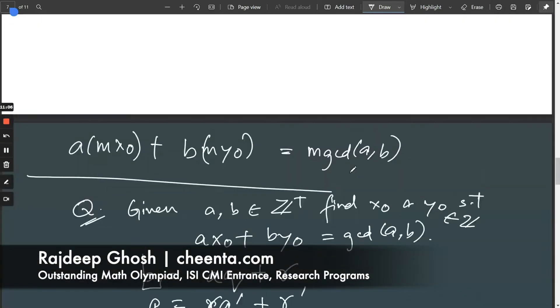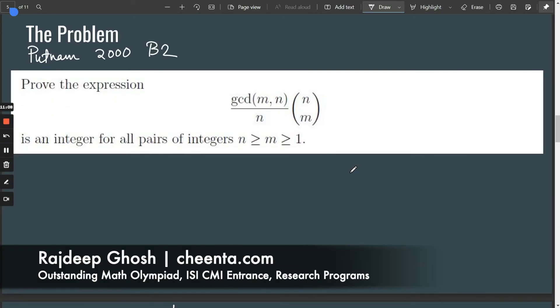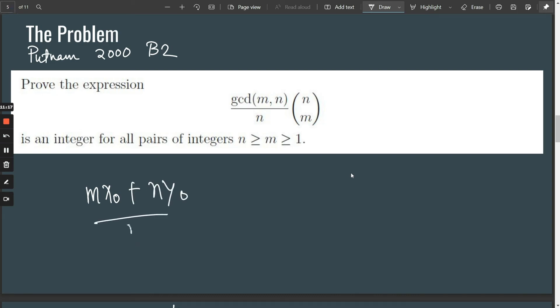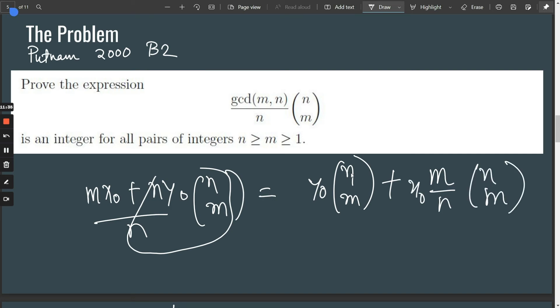Remember the problem that you're trying to solve? This. Now using this result, we can actually write gcd(m,n) as m·x0 + n·y0 divided by n times n choose m. We can write this, but this is just, well, this term is obviously an integer. So we just write y0 times n choose m. This is clearly an integer. We are left with m/n times x0 times n choose m.